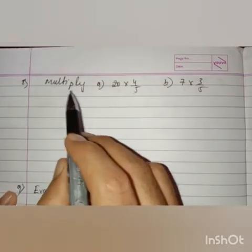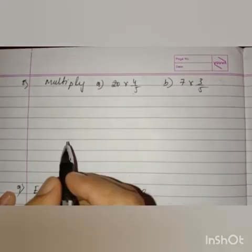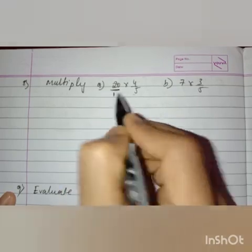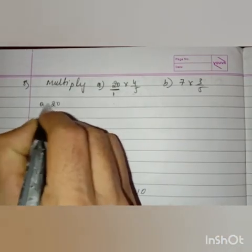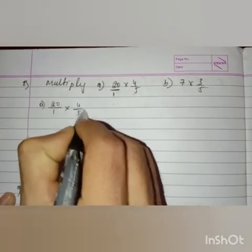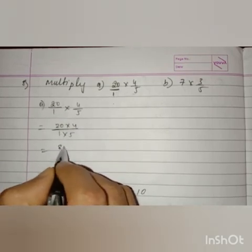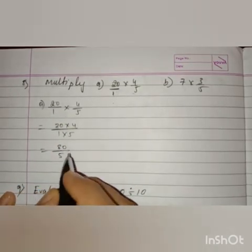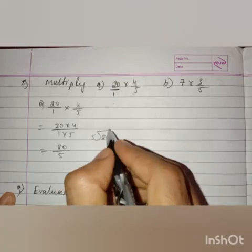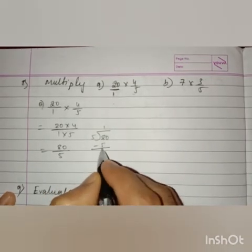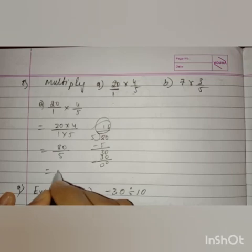Got it, children? Next, question number 8: multiply (a) 20 into 4 by 5. We do not have a denominator, so let us put 1. Now multiply the numerators and multiply the denominators: 20 by 1 into 4 by 5 equals 20 times 4 by 1 times 5, which is 80 by 5. Since 80 is divisible by 5, dividing gives the answer 16.